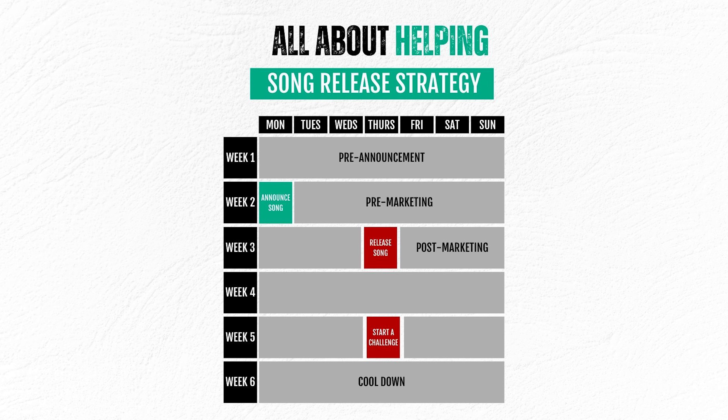These are the steps that can get your song from zero to 10K. It takes time. A minimum time limit I would do: one week on the pre-announcement, one day on the announcement, two weeks on the pre-marketing, one day on the release, two weeks on the post-marketing. That would be a five-week campaign just to get to your first 10K.